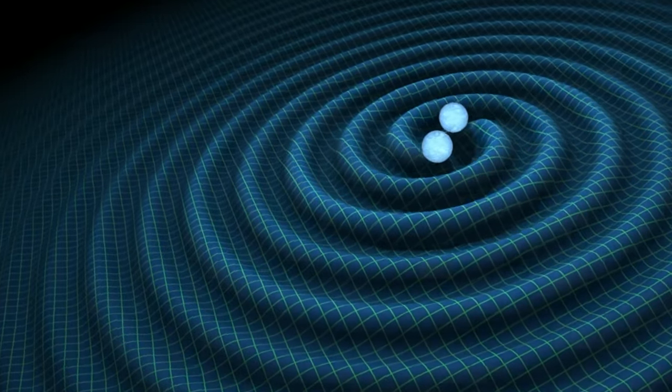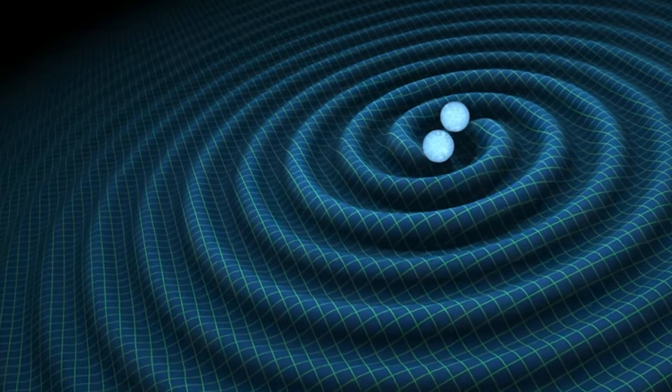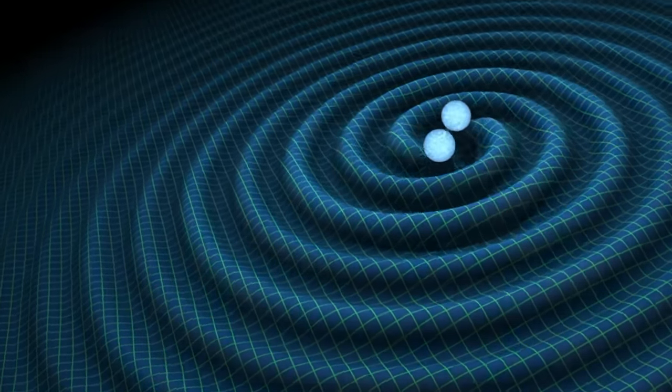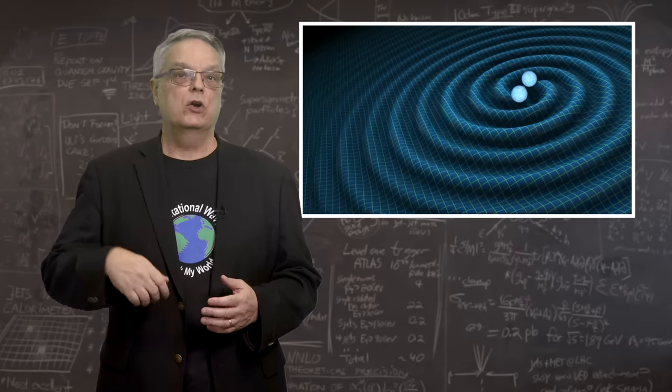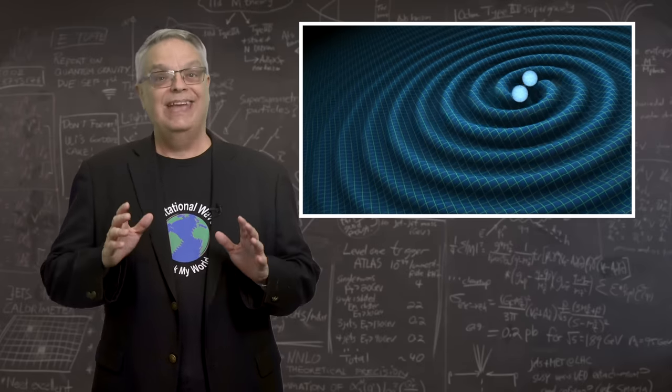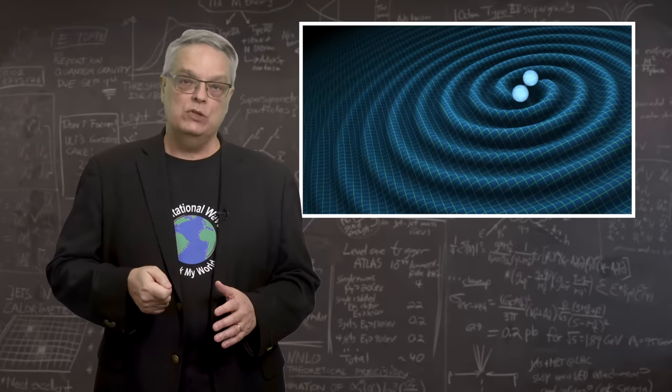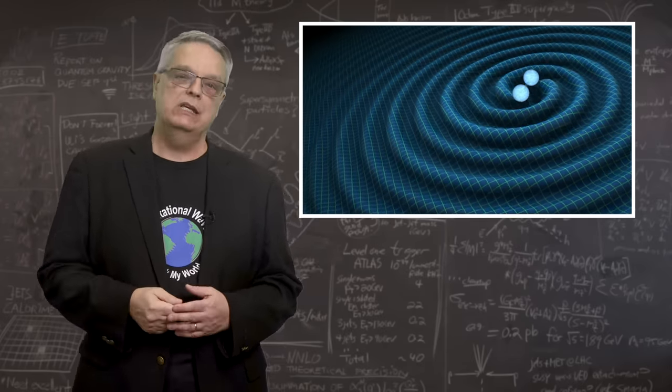Because they're heavy and small, two black holes can get very close to one another. And when they orbit, they move at an appreciable fraction of the speed of light and undergo extreme acceleration. And therefore, they emit appreciable amounts of gravitational radiation.